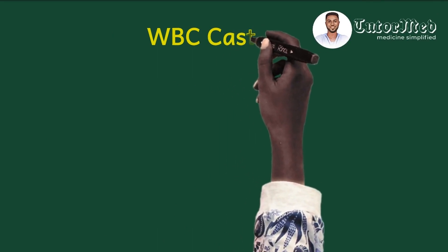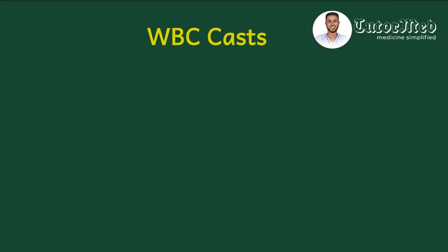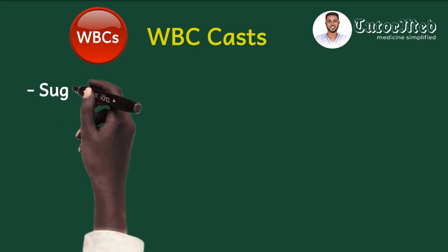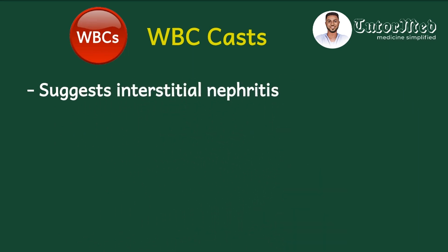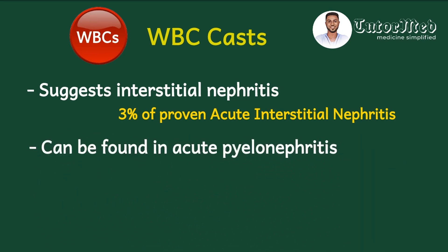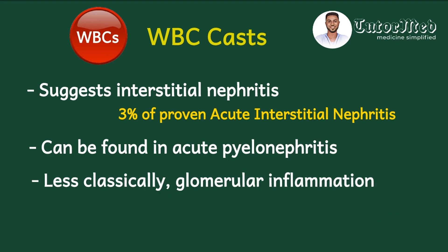White cell casts are made up of Tamm-Horsfall proteins with white blood cells. Their presence suggests interstitial nephritis; however, only 3% of patients with biopsy-proven acute interstitial nephritis have white cell casts. They can also be found in acute pyelonephritis and less classically in glomerulonephritis. So in acute interstitial nephritis, you may have red cell casts or classically white cell casts.